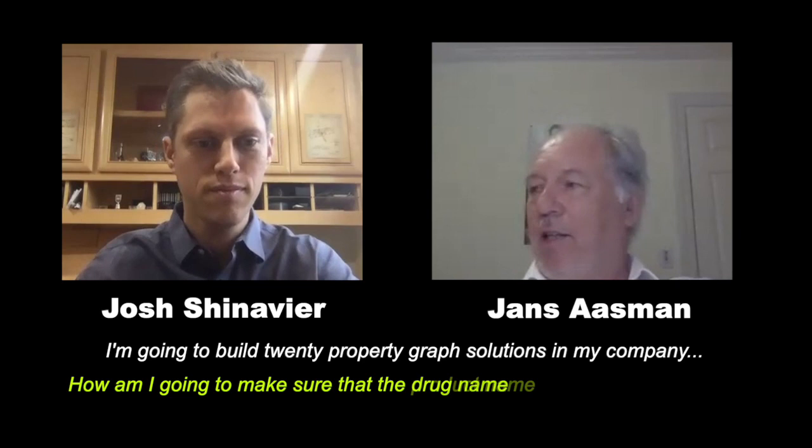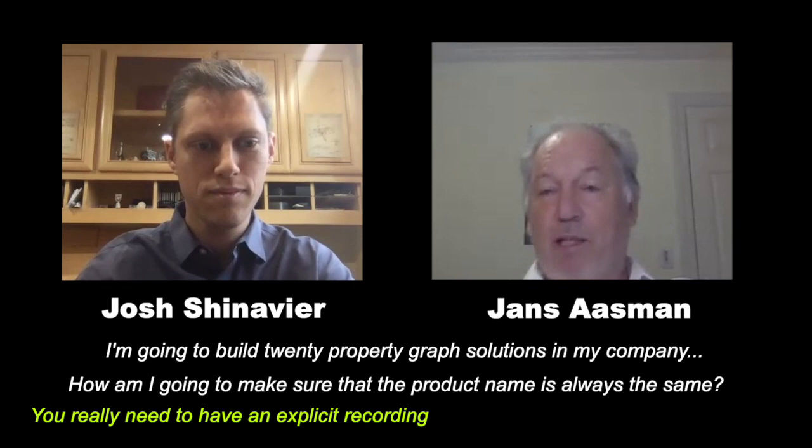Now to the technical part. What problems can developers run into when they create a property graph database without thinking about identity or ontology — what's the first problem when they try to put two different data sources together? You're hitting the core issue: you have to come up with a convention or standard for how you're going to name your things. If you build 20 property graph solutions in your company, how do you make sure that the customer, drug name, or product is always the same? You really need an explicit recording of how you're going to name things.